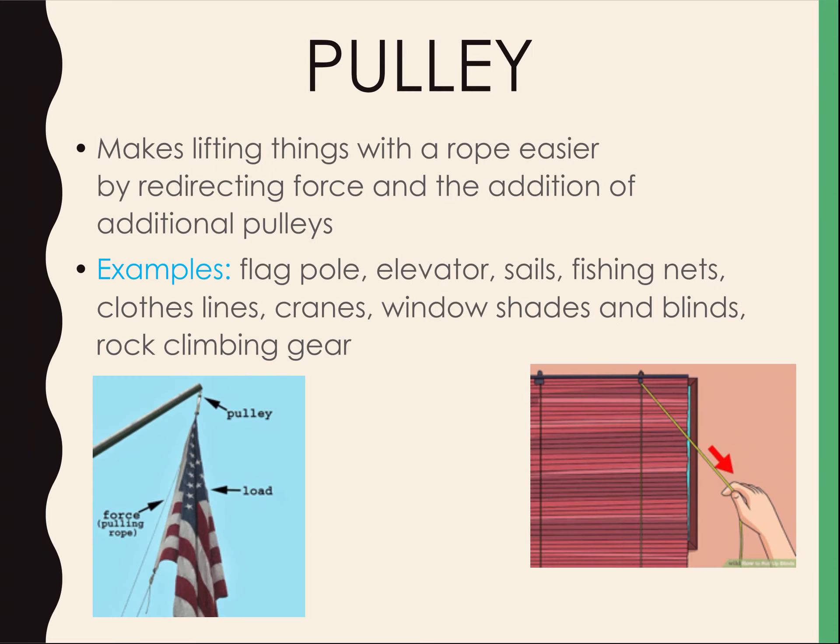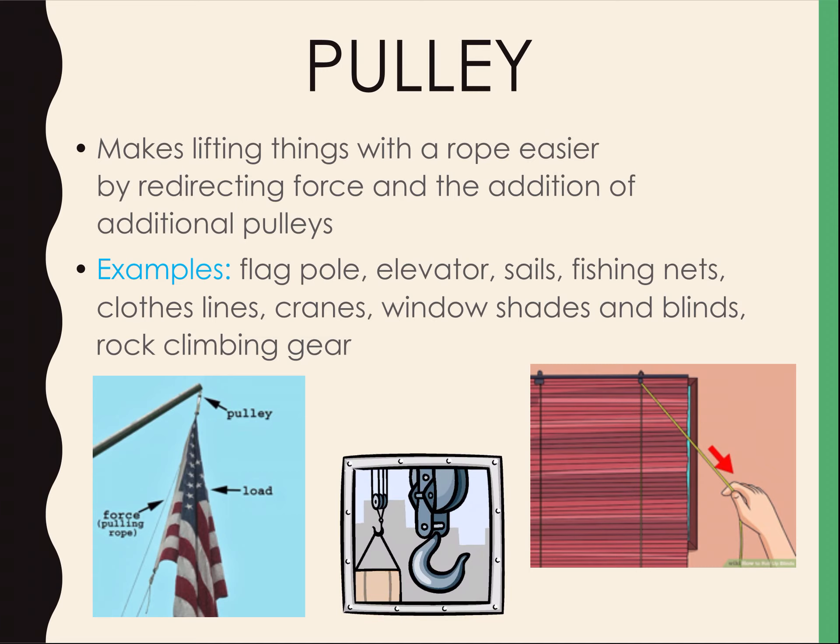Then we have our pulley. A pulley makes lifting things with a rope easier by redirecting the force, and the addition of more pulleys helps even further. If you look at the picture of the flagpole, your load is the flag and the pulley is at the top of the flagpole — you use force to pull the rope and the pulley system moves it through. Window shades or blinds are another great example of pulleys: as you pull down, things come up.